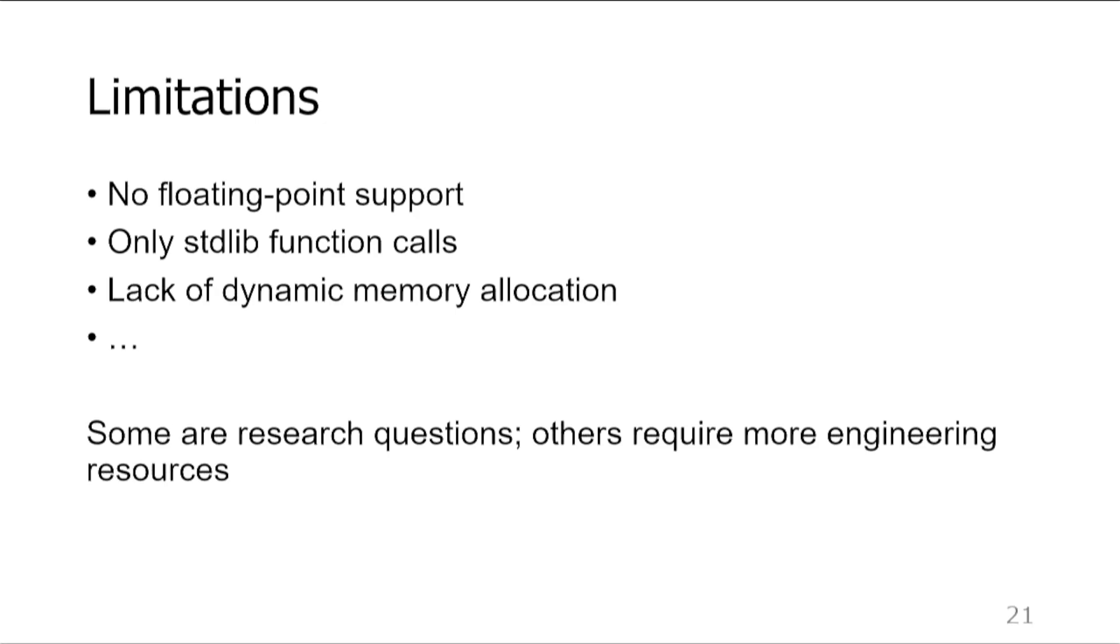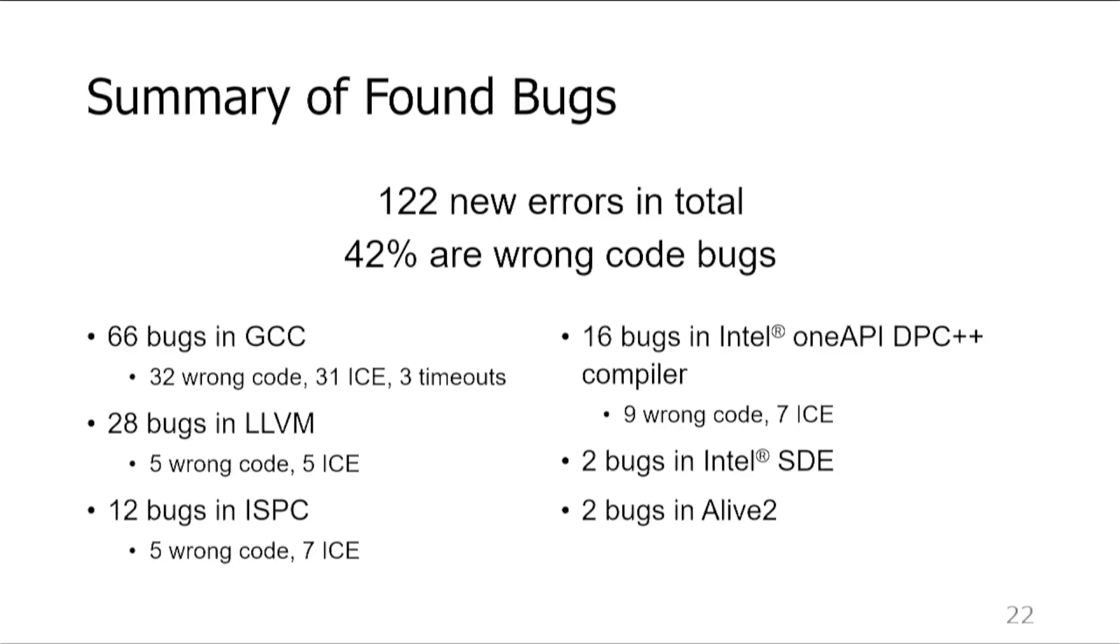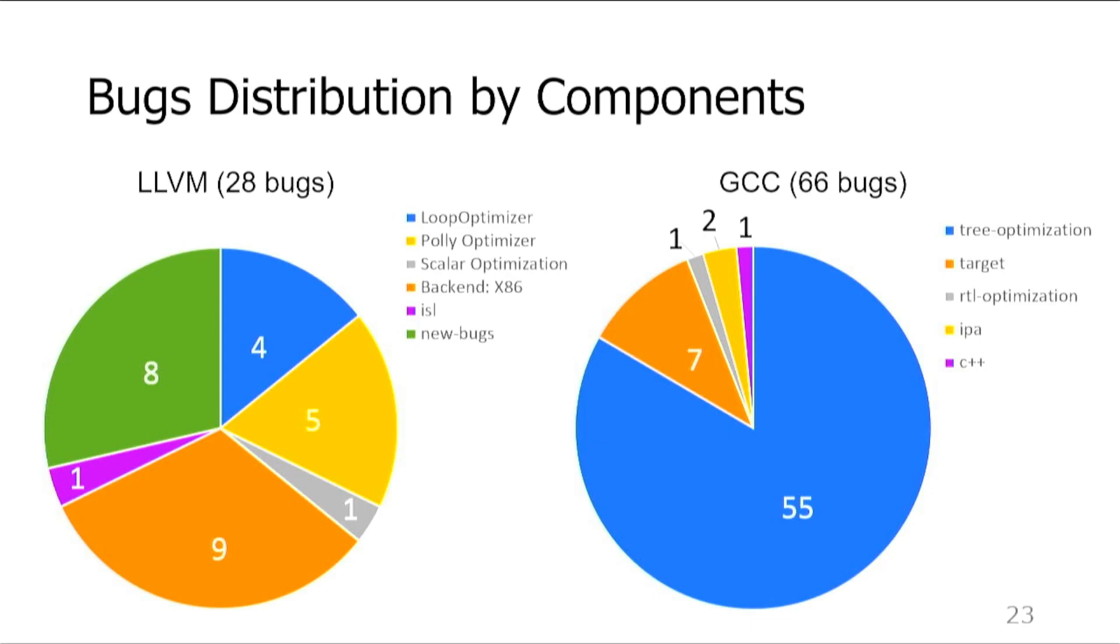And now it's time to talk about the results. The most important practical result is the number of reported bugs. In total, we were able to detect 122 previously unknown errors in multiple compilers. 42% of them were miscompilations. This slide shows in which compiler components we were able to detect bugs. As you can see, the majority of them were detected in target-specific optimizations and various middle-end optimizing parts of the compiler. In fact, only one of the reported bugs was detected in the middle-end. This is exactly what we're trying to achieve.